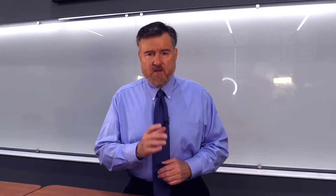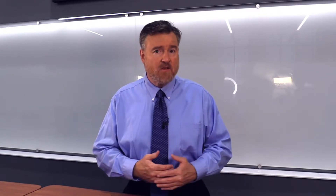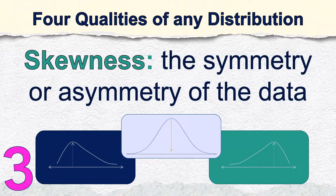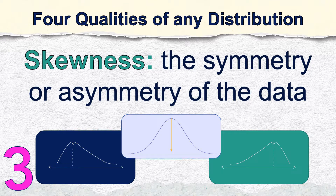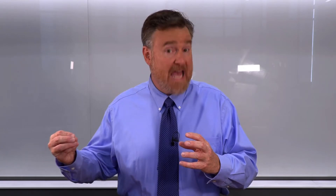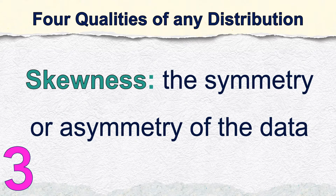The third question we ask about our distribution of scale-level scores is whether the distribution is symmetric. Does it look the same on both sides? Would it balance nicely in the middle? Is one side pulled out dramatically, or is another side bunched up with scores? That is the question of symmetry. We answer questions about symmetry using a measure of skewness. Skewness tells us whether one tail of the distribution has been pulled out in a specific direction.